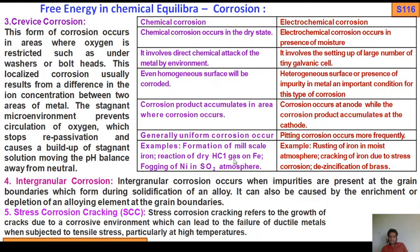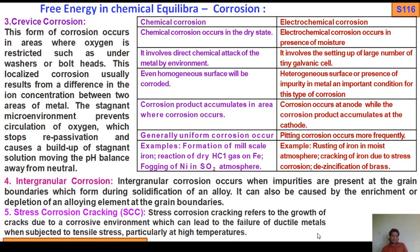Number five is stress corrosion cracking, which refers to growth of cracks due to a corrosive environment — which may include waste, alkali, or acids — and can lead to release of toxic chemicals. Stress corrosion cracking refers to the growth of cracks due to a corrosive environment which can lead to the failure of ductile metals when subject to tensile stress, particularly at high temperature.